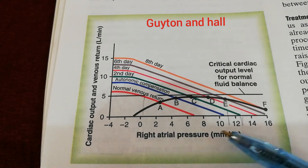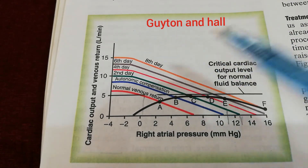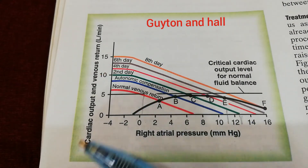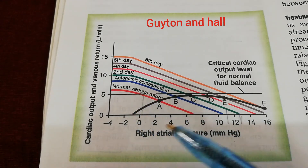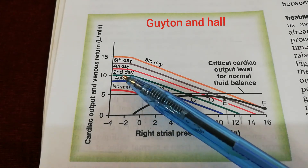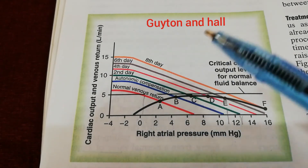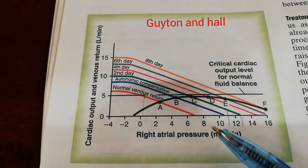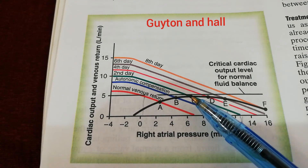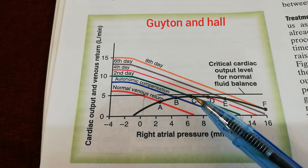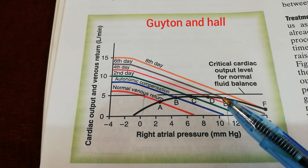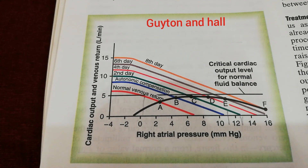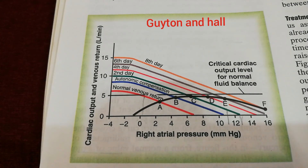This is the graphical analysis of the decompensatory cardiac failure, in which we discussed the cardiac output curve, the venous return curve, the right atrial pressure, and the mean systemic filling pressure. With increasing fluid retention the venous return kept increasing from the first day through the second, fourth, sixth, and eighth days. The right atrial pressure and mean systemic filling pressure kept increasing, but the cardiac output could not increase beyond this point. At point C, deterioration starts and cardiac output begins decreasing because the system has decompensated — beyond this point, death will definitely occur.